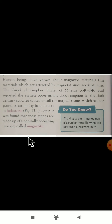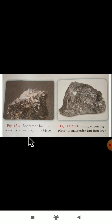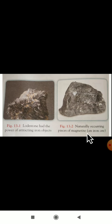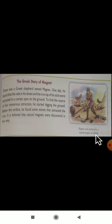Moving a bar magnet near a circular metallic wire can produce a current in it — remember this. Loadstone had the power of attracting iron objects. Naturally occurring pieces of magnetite — an iron ore — would attract iron materials automatically. Magnetite is an iron ore.